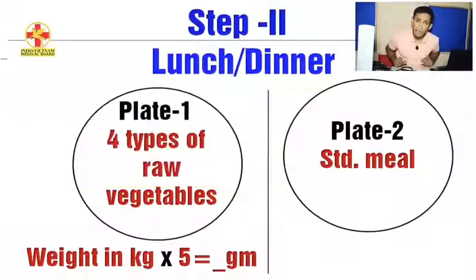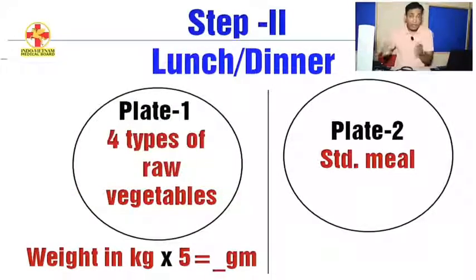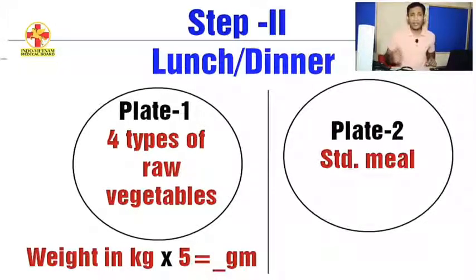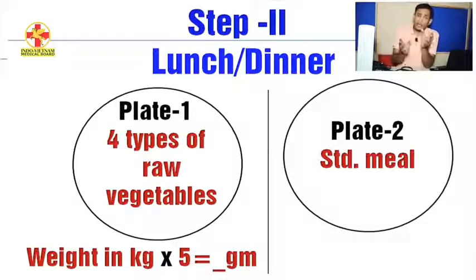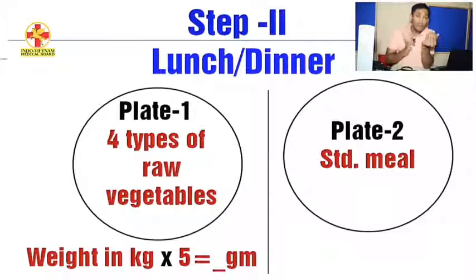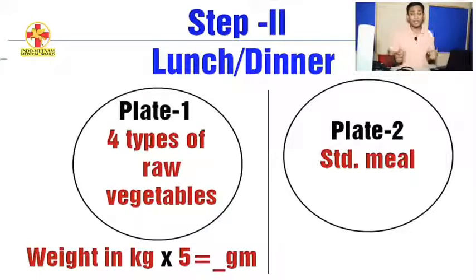Now, lunch. When you sit for lunch, you have to take two plates — Plate 1 and Plate 2. For Plate 1, there are 3 to 4 vegetables you can eat raw, such as tomato, muli, gajar, and kakdi. You can eat these raw vegetables. If you prefer, you can steam them — steamed vegetables are more useful. Either way, eat 3 to 4 kinds of vegetables.